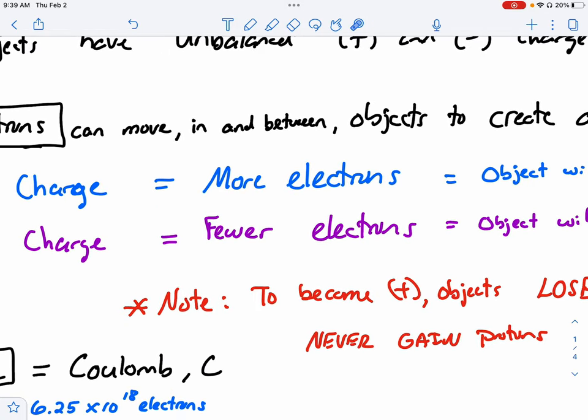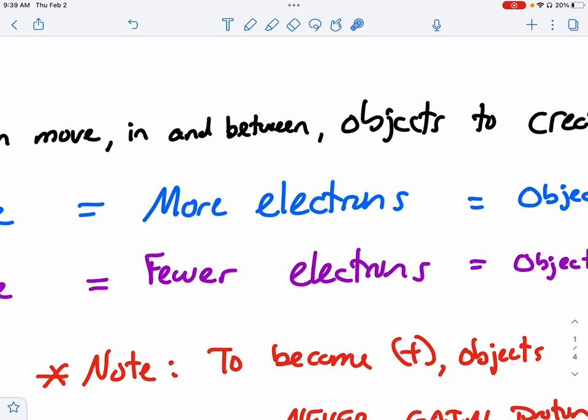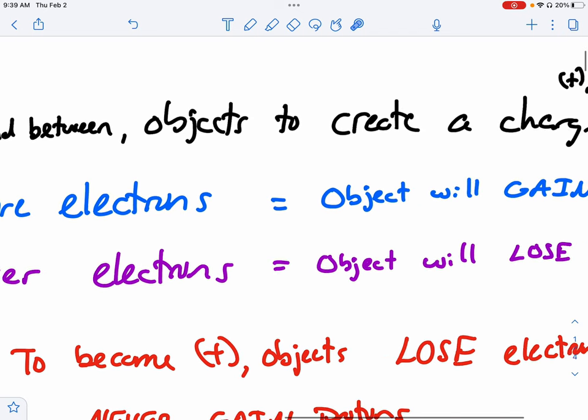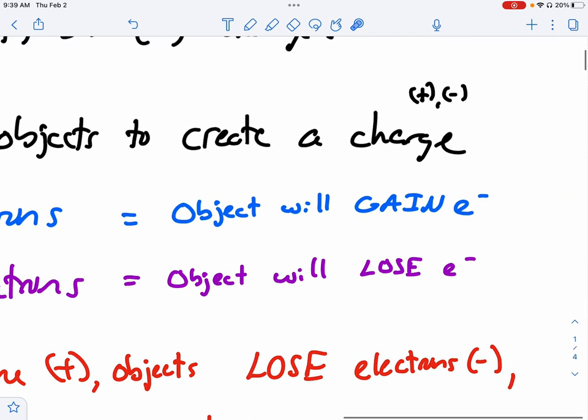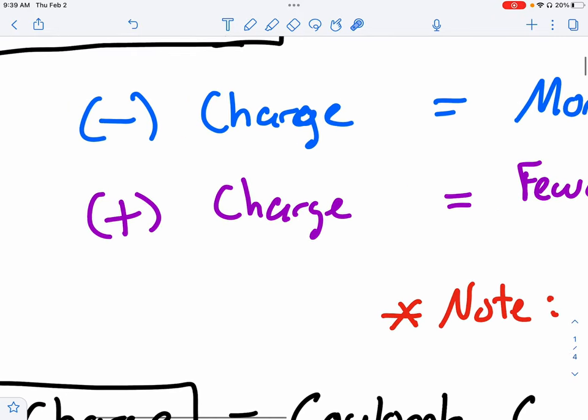So you might be asking yourself, well how does that happen? Well if we have a negative charge, that makes a lot of sense because all I need is more electrons and that will make the imbalance and the object will then gain electrons to become more negative. To be positive, the opposite is true.